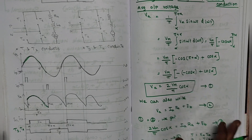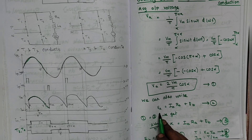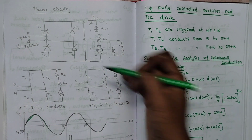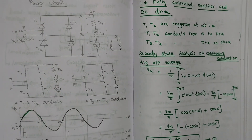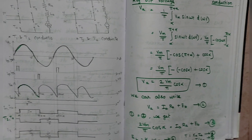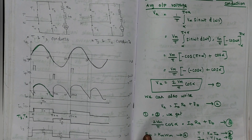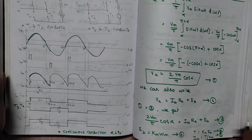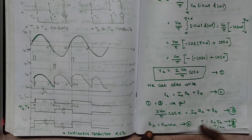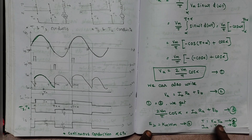Next we want to find the speed, which is very important. The basic motor equation is Va = Ia·Ra + Eb. Back EMF Eb is proportional to speed ωM, so Eb = Km·ωM, where Km is a constant. Similarly, torque T = Km·Ia. These two equations are very important — please keep them in mind always. We are going to substitute these into the motor equation, equating the Va derived from the rectifier with the motor's Va.